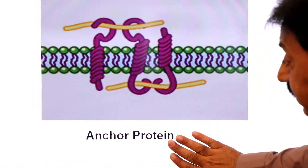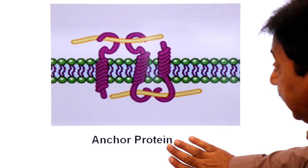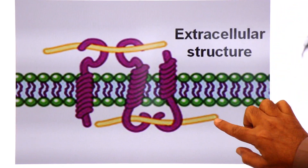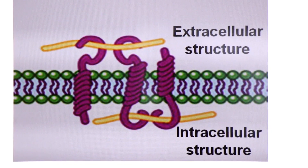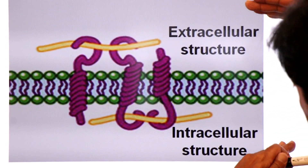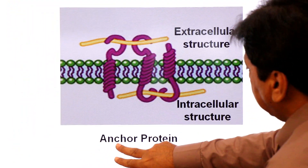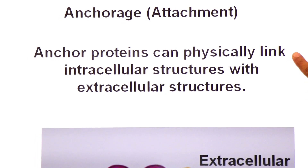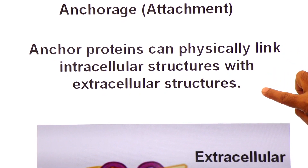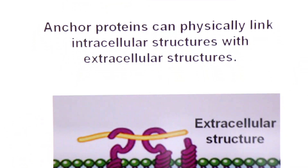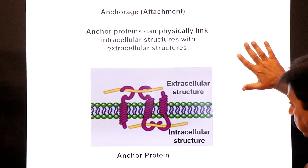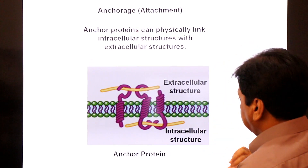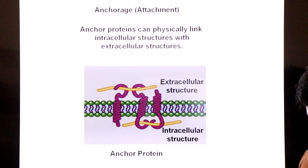Anchor proteins physically link intracellular structures with extracellular structures. So functions of integral proteins include: transport proteins, and anchor proteins which link intracellular and extracellular structures — also called linker proteins.